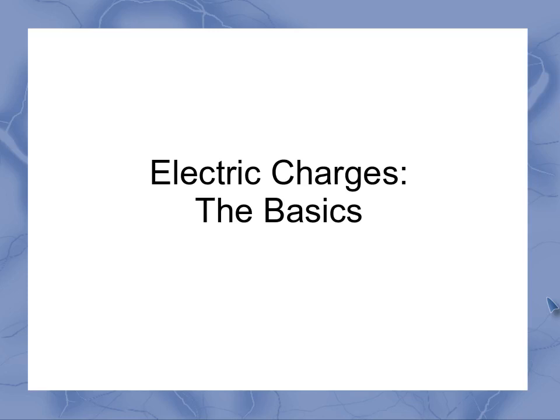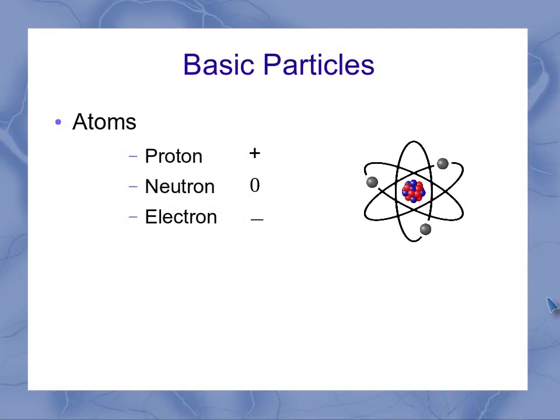Let's look at some of the basics for electric charges. If I've got an atom, it's made up of different components. You've seen this before, I'm sure. It's got protons and neutrons down in the nucleus, where the protons are positive and the neutrons have zero charge, or they're neutral. And surrounding that we have our electrons, which are negative.